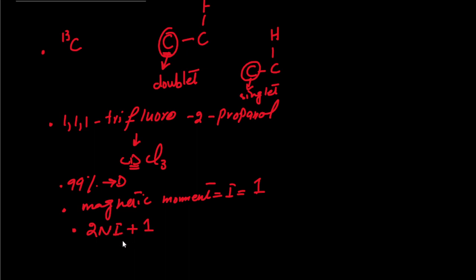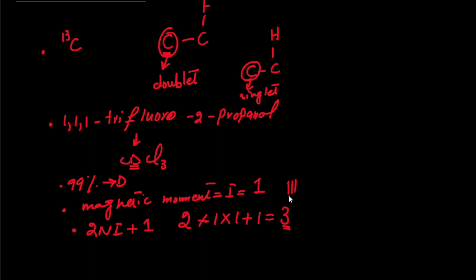In the formula, N is the number of neighboring nuclei and I is the magnetic moment. There is only one deuterium in CDCl3, and chlorine does not contribute to the carbon-13 NMR spectrum. So: 2 × 1 × 1 + 1 = 3, giving a multiplicity of 3. This means CDCl3 will give us 3 lines in the carbon-13 NMR spectrum.